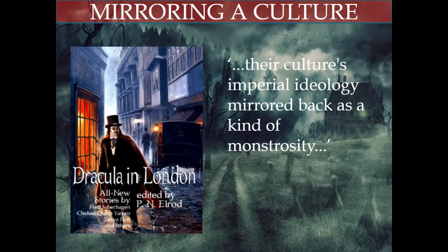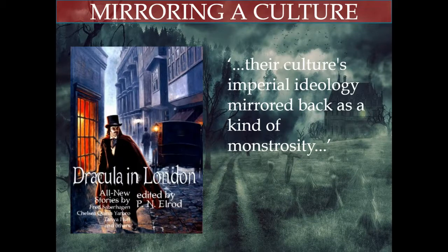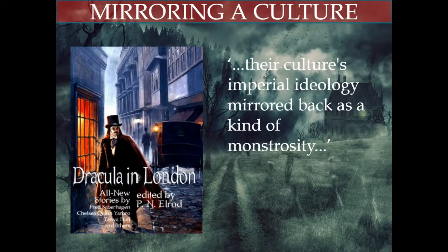Steven Dorata argues that what Britain sees is its culture's imperial ideology mirrored back as a kind of monstrosity — instead of the British claiming power abroad, the foreigner in this novel stakes a claim on British native land. Similarly in The Little Stranger, British identity is spotlighted, but rather than the foreigner as the subject of interest, the outsider here is very much the lower class. There are lots of references to the grandeur of the house and its subscription to a certain hierarchy.